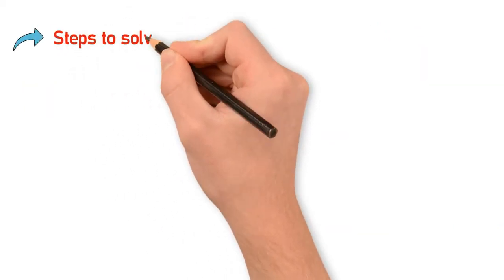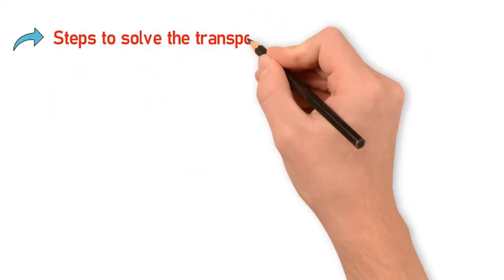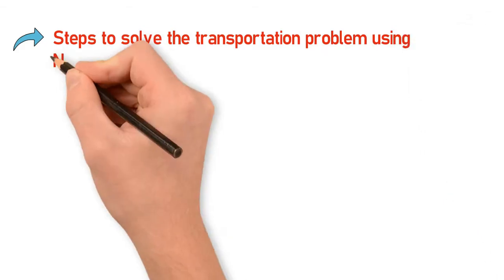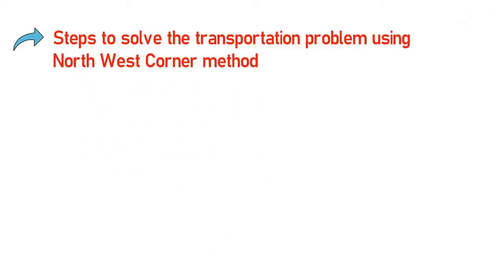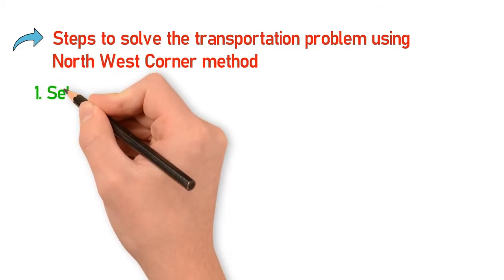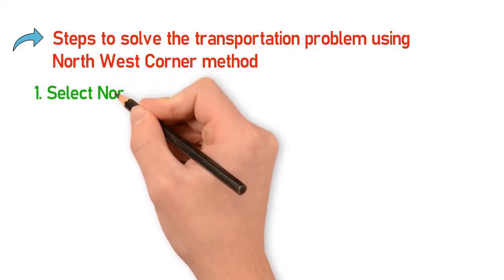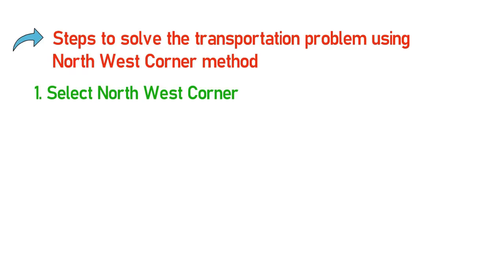We will see what are the steps to follow to find out the initial basic feasible solution for a given transportation problem by using the Northwest Corner method. The transportation problem is given in the form of a matrix — a combination of rows and columns. The first step is to select the Northwest Corner.